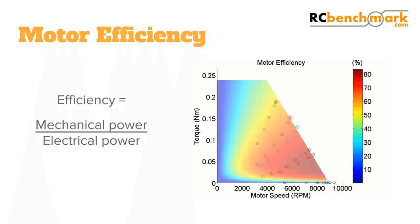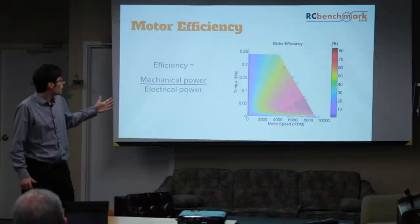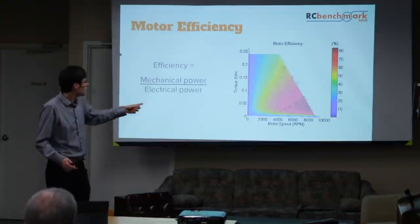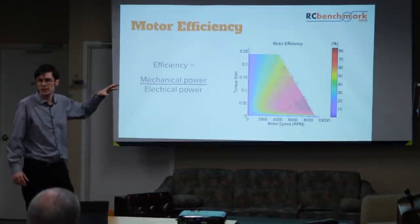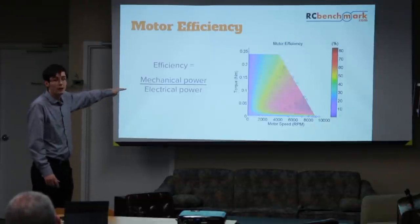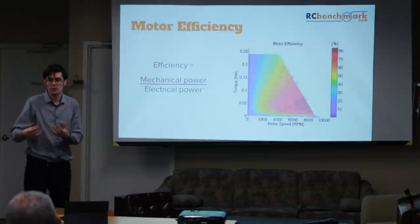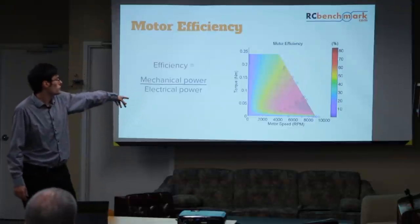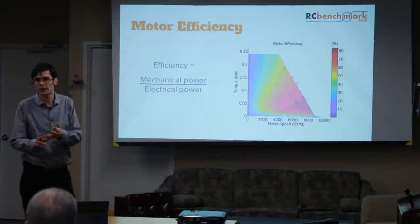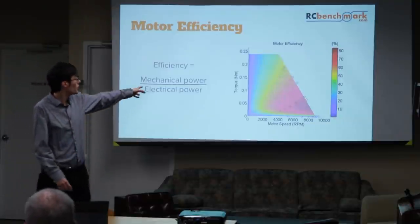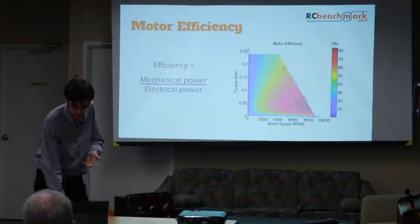This is actual data generated from the dynamometer. We used a bunch of propellers and extracted a model from them. What you're seeing is efficiency — mechanical power, which is torque times RPM, divided by total electrical power from the battery. The model also estimates additional losses like bearing friction, but really the biggest losses in your motor come from the resistance of the wire.